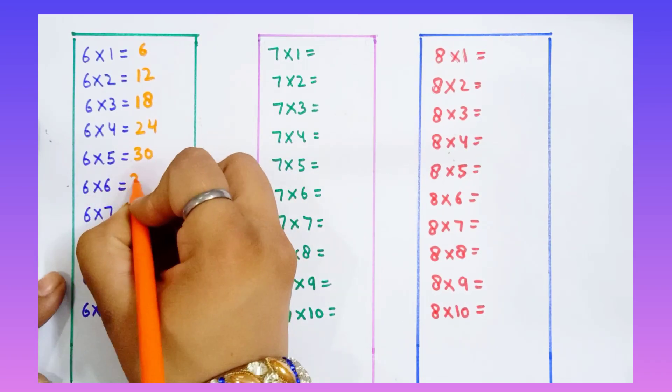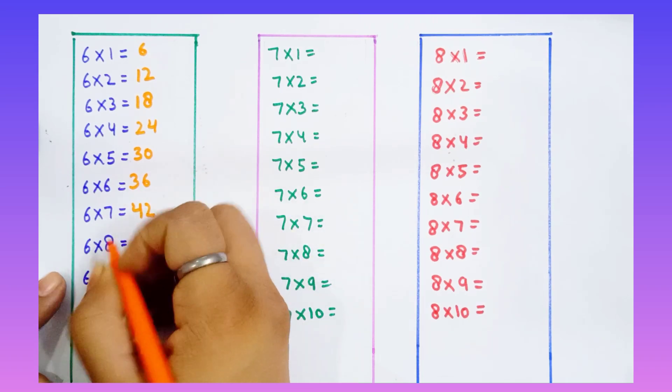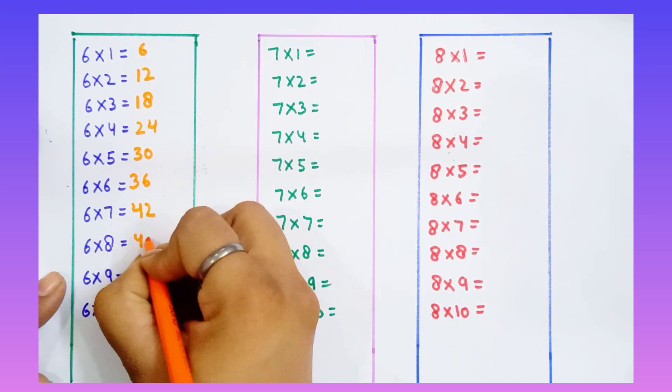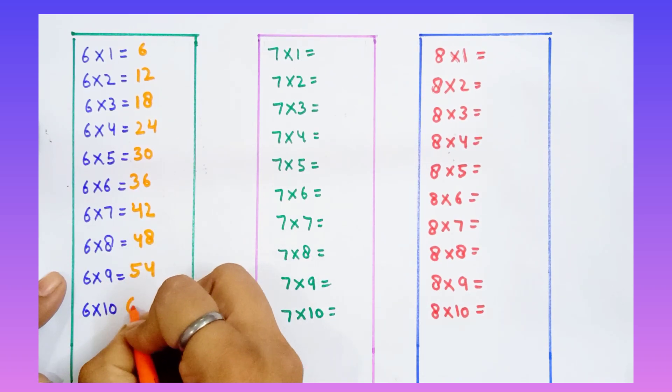6 sixes are 36. 6 sevens are 42. 6 eights are 48. 6 nines are 54. 6 tens are 60.